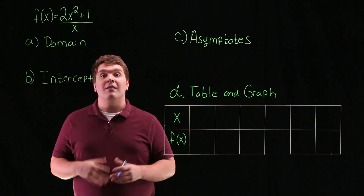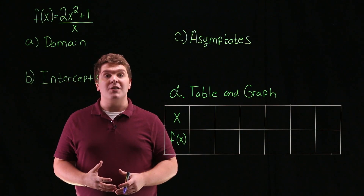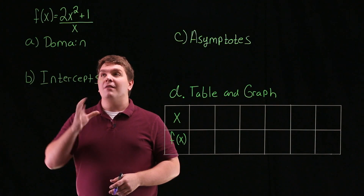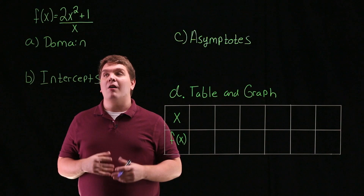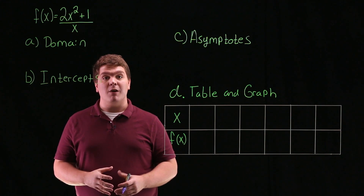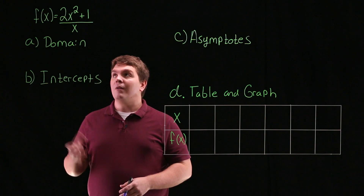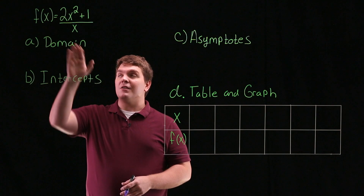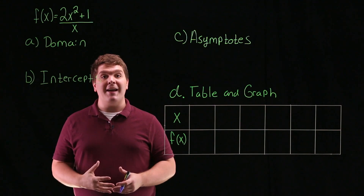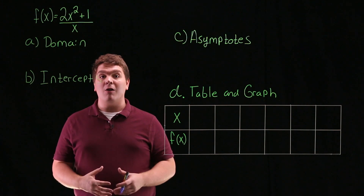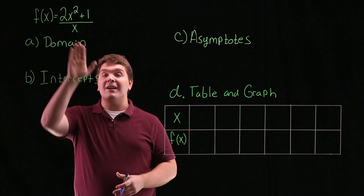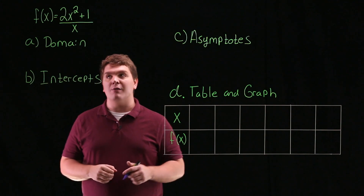Since we're working with a rational function, we know that the domain is all of the values except where the denominator is equal to 0. Looking at this function, since our denominator is just x, our domain is going to be all real numbers except for when x equals 0.